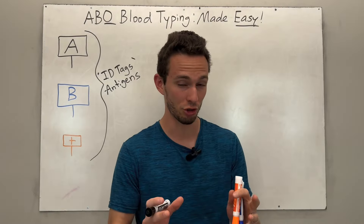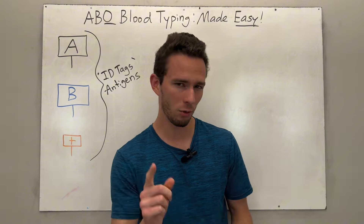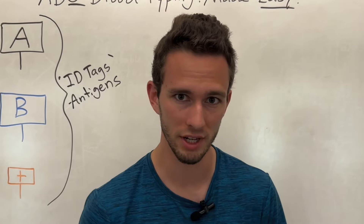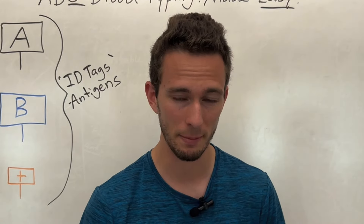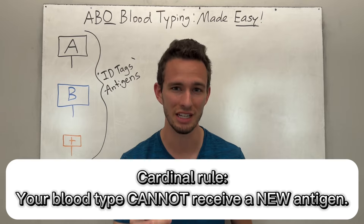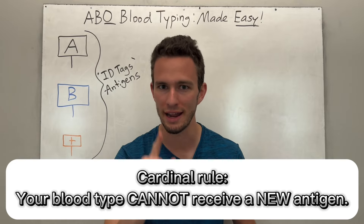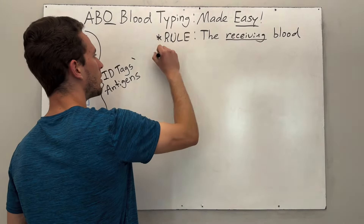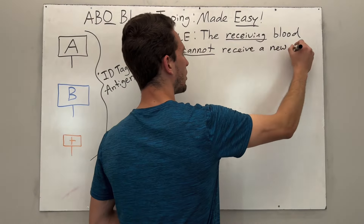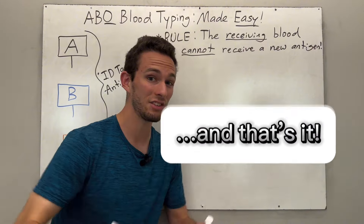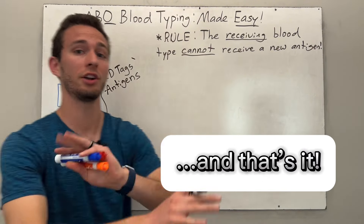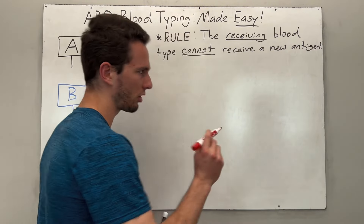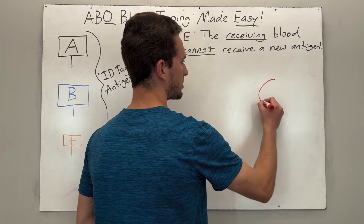Now this is where the middle school lunchroom comes in. Before we start, I want you to know the cardinal rule for blood type compatibility: your blood cannot receive a new antigen. And that is the only rule. If you follow this, you can understand all of blood typing.